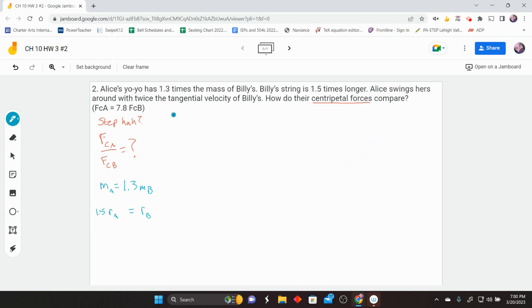Then Alice swings hers around with twice the tangential velocity of Billy's yo-yo. So what that means is V tangential of Alice is twice Billy's. So it's 2 times V sub B.